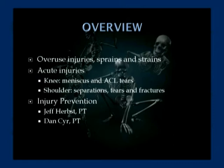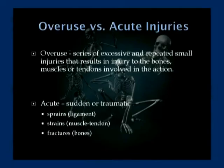We'll talk about more acute injuries, particularly of the knee — the meniscus and the ACL, or anterior cruciate ligament. In the shoulder, we'll discuss separations, different types of tears, and some fractures around the shoulder. Then we'll move forward and talk about prevention with Dan and Jeff.